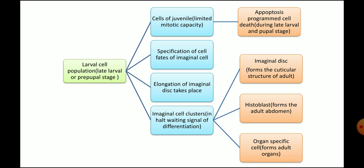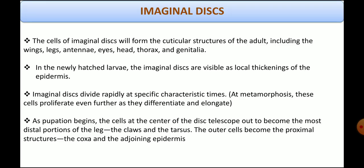So we can say that the preparation for adult transition begins during the late larval stages, and specification of their prospective organs occurs during this stage, but are on hold awaiting the signal of differentiation. Imaginal disc cells will form cuticular structures like the wings, legs, antenna, head, eyes, and genitalia. The imaginal discs are visible as a local thickening of epidermis. As pupation begins, the cells in the center of the disc telescope out to become the most distal portions of the leg, and the outer cells become the proximal structures.